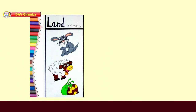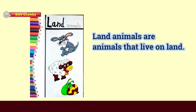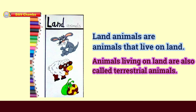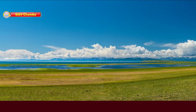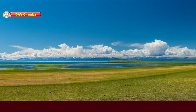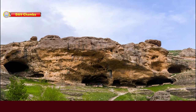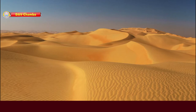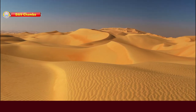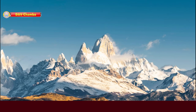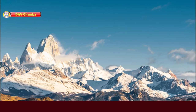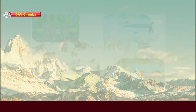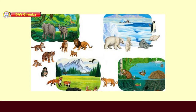Land animals are those animals that live on land. Animals living on land are also called terrestrial animals. The land or earth has plains, caves, forests, deserts, and snow covered areas. Different land animals live on different parts of land.